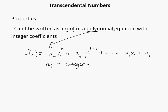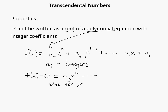And you saw integers from my other video — basically just whole numbers, it can be negative or zero. The root is basically where you set f of x equals zero, then you solve for x. So you'll have 0 equals a-n x-to-the-n and so on, then you solve for x, and x is the root. So a transcendental number can't be written in this way.